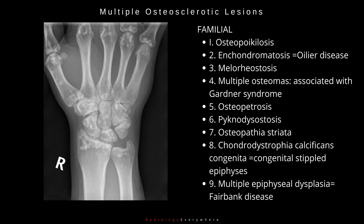5. Osteopetrosis. 6. Pycnodysostosis. 7. Osteopathia striata. 8. Chondrodystrophia calcificans congenita, or congenital stippled epiphyses. 9. Multiple epiphyseal dysplasia, or Fairbank disease.